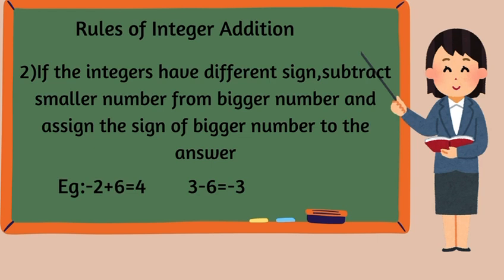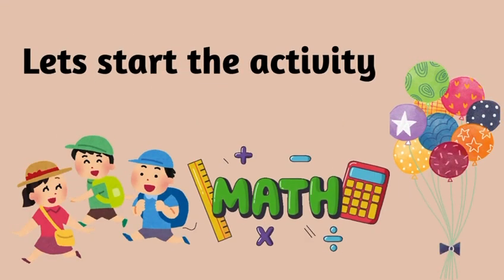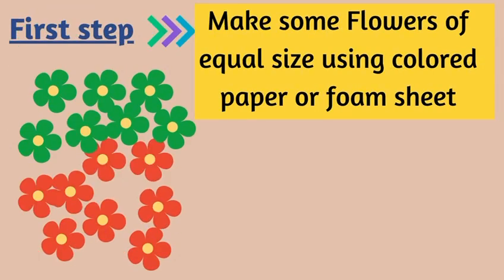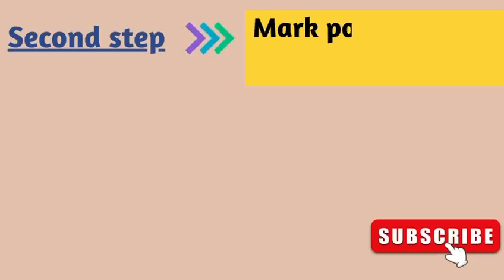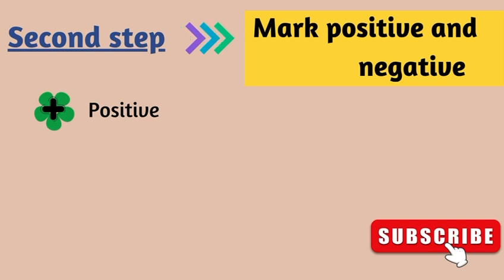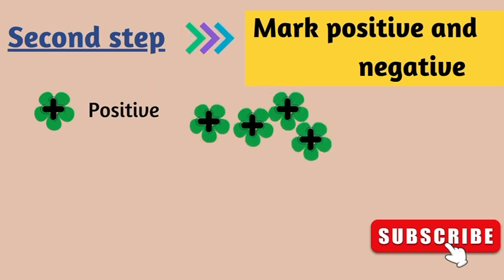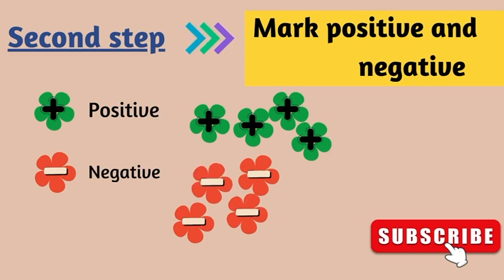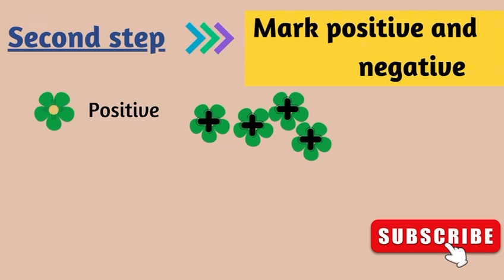First step: make some flowers of equal size using your colored paper or foam sheets. Here I am using two different colors — green and red. Second step: mark positive and negative. Green color represents positive, and at the center you mark the positive symbol. Red color represents negative, and at the center you mark the negative symbol.